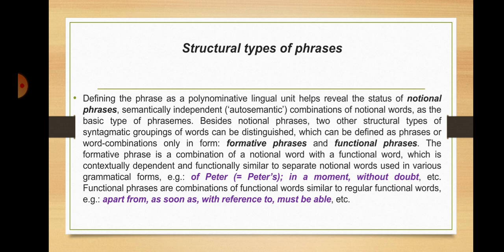Defining the phrase as a polynominative lingual unit helps reveal the status of notional phrases — semantically independent or auto-semantic combinations of notional words — as the basic type of phrases. Besides notional phrases, two other structural types can be distinguished: formative phrases and functional phrases. The formative phrase is a combination of a notional word with a functional word, contextually dependent and similar to separate notional words in various grammatical forms — for example, 'of Peter' meaning 'Peter's,' or 'in a moment,' 'without doubt.'